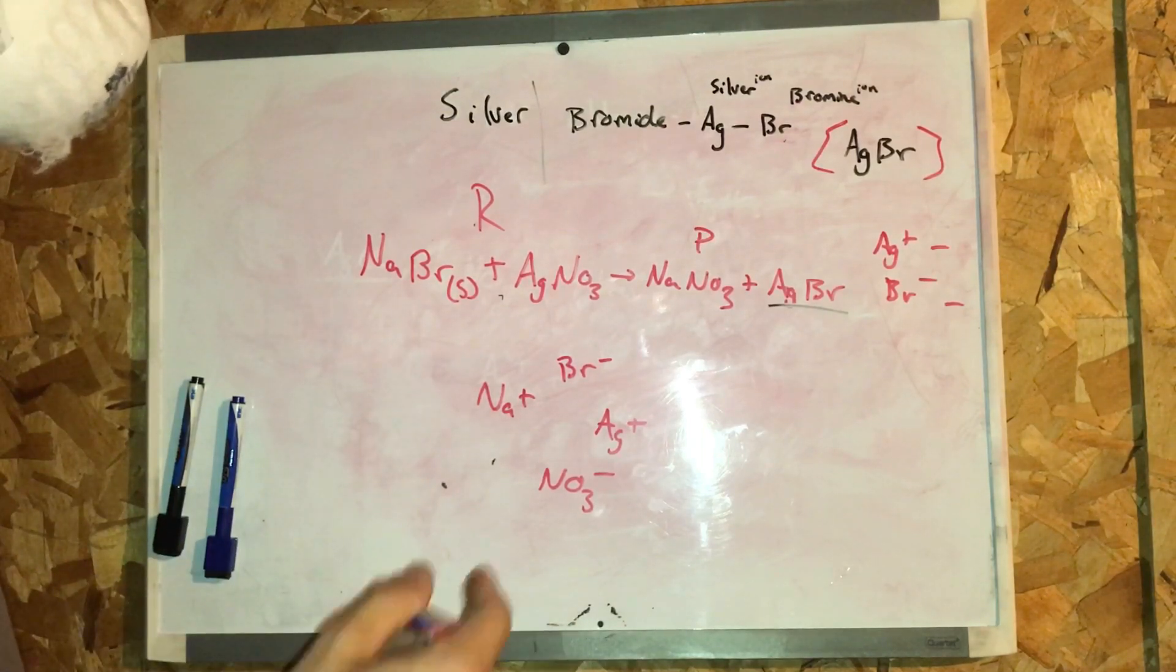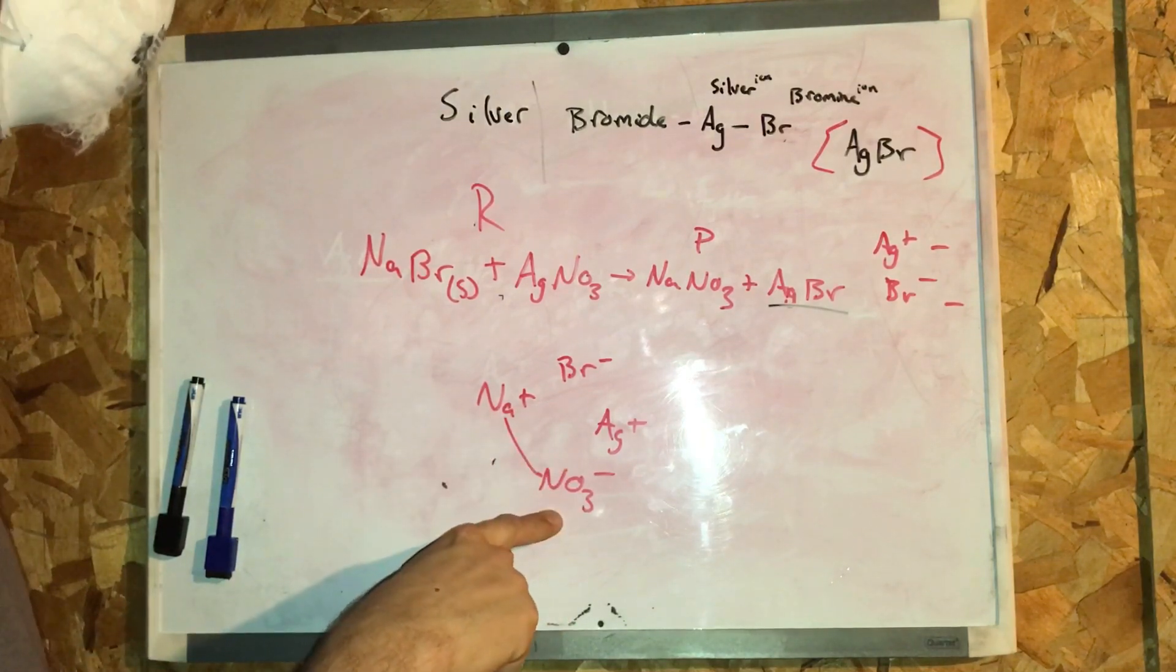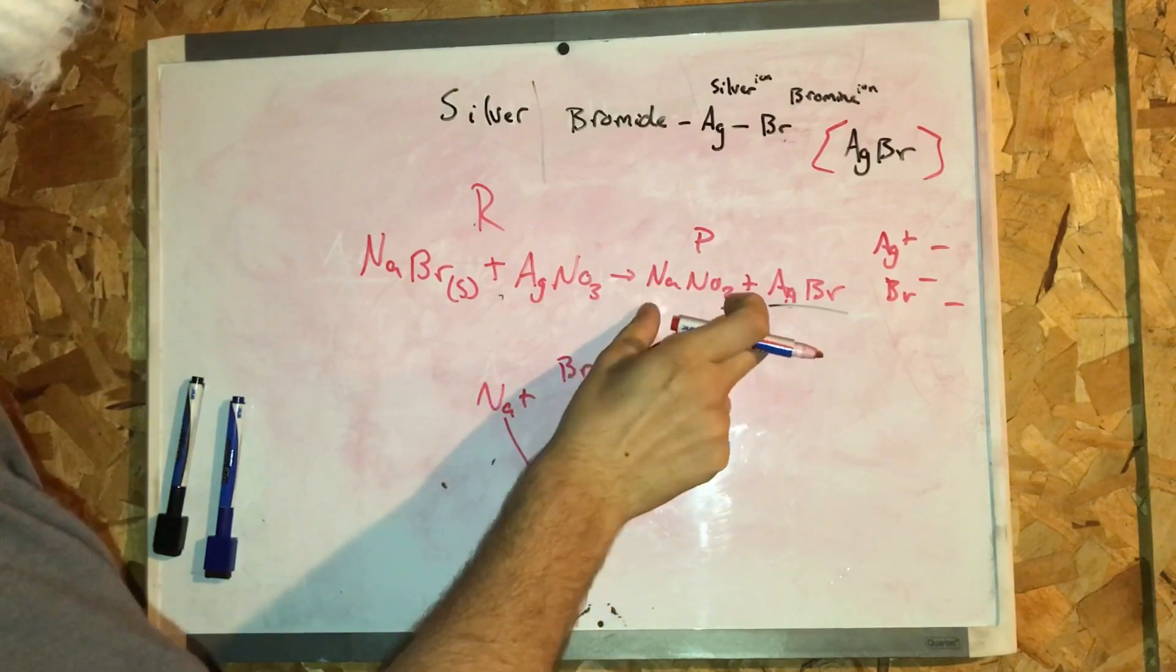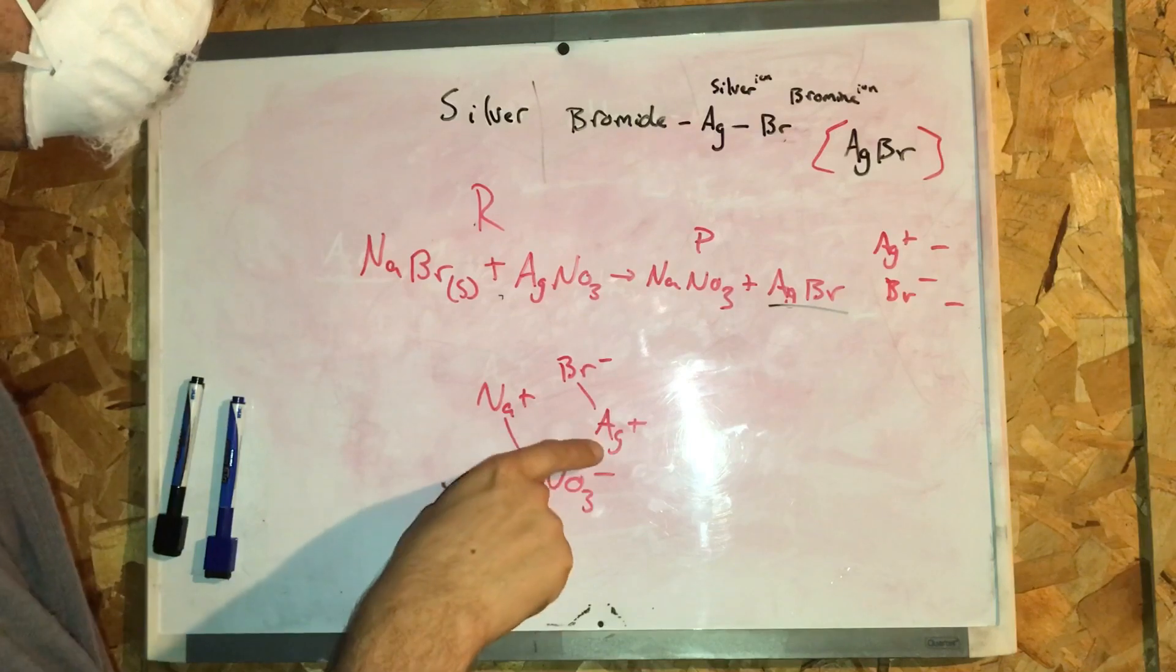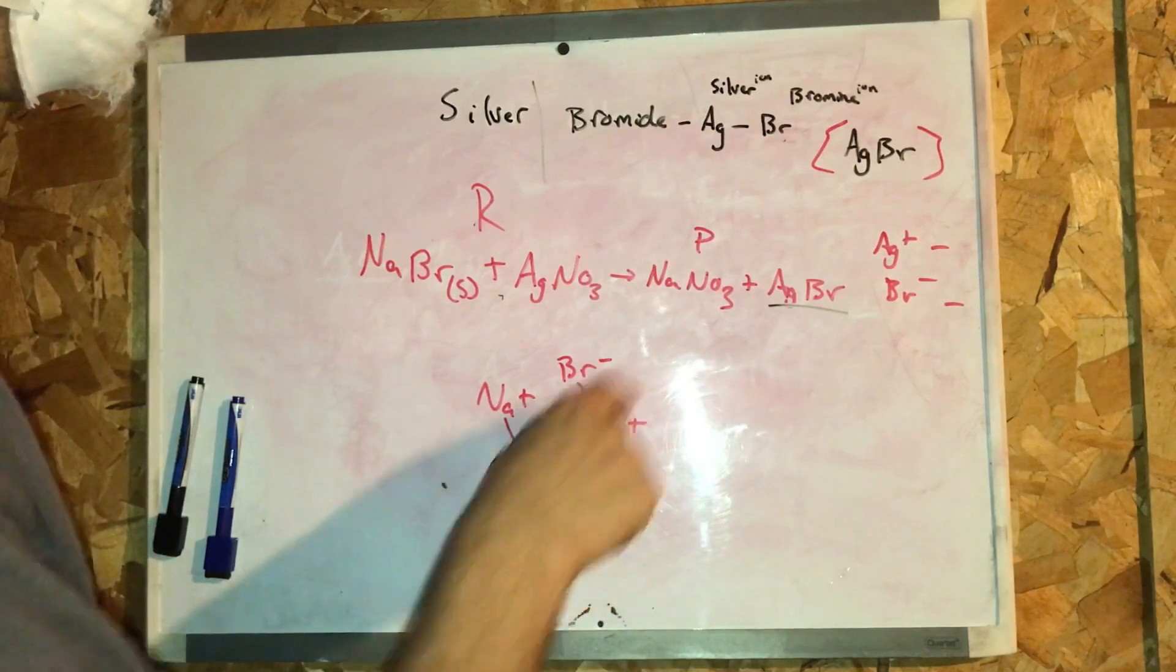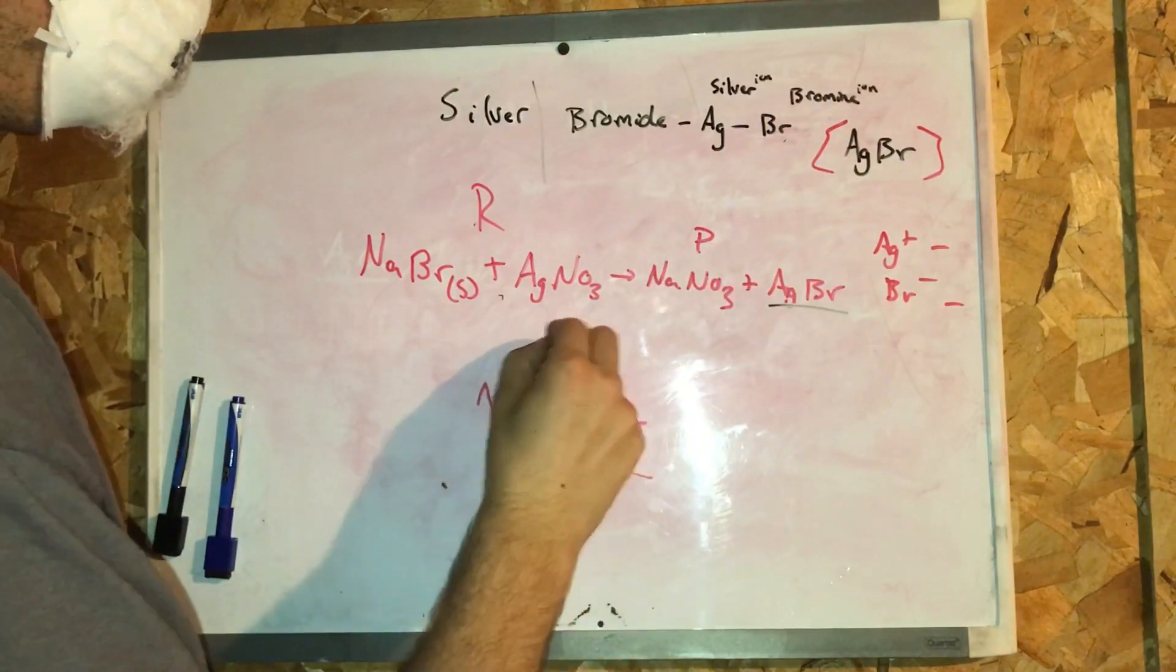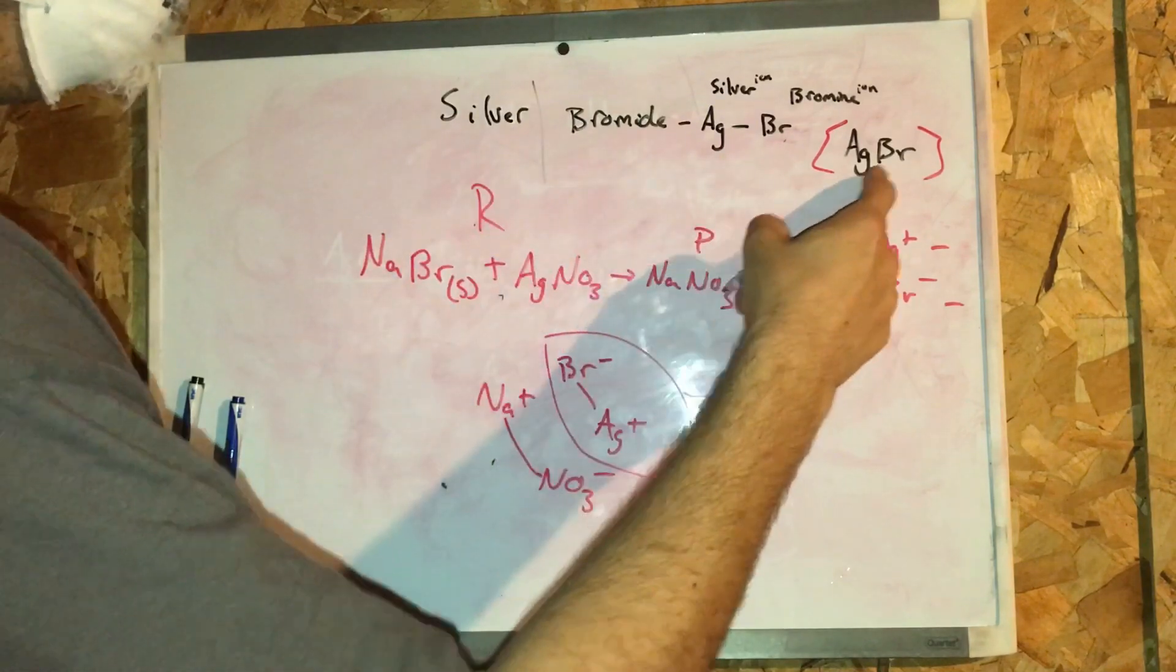These ions, they bond. Sodium bonds with nitrate, produces sodium nitrate as one of the products. The silver bonds with the bromine ion, and this is a molecule of silver bromide, AgBr.